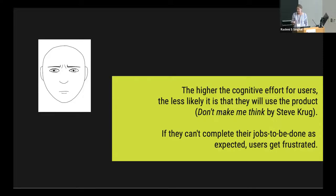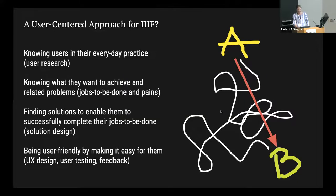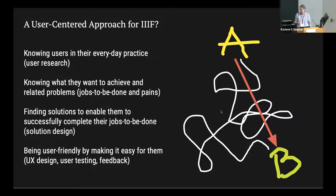If users can't complete their jobs to be done as expected, they get frustrated. We know the next thing after storage will be annotations — that's clear. The question is: would a user-centered approach make sense for IIIF? That would mean knowing users in their everyday practice through user research, knowing what they want to achieve, knowing related problems — the jobs to be done and pains — then finding solutions to enable them to successfully complete those tasks. That's the solution design, and finally the UX design, user testing, and feedback.